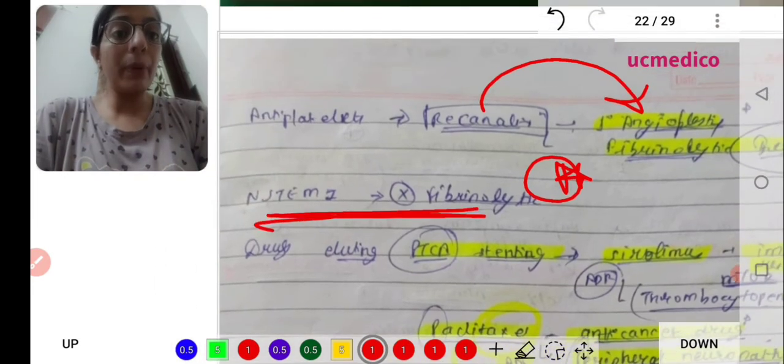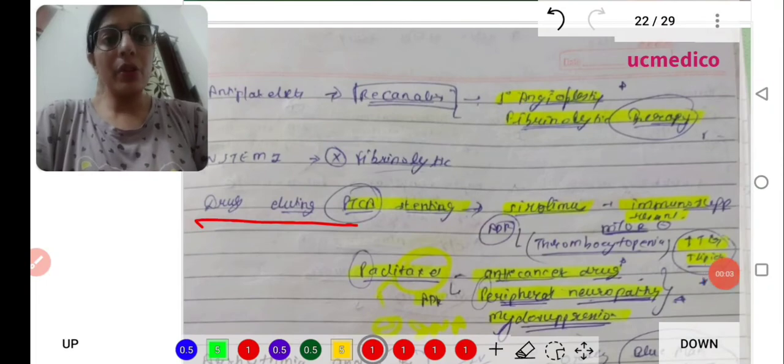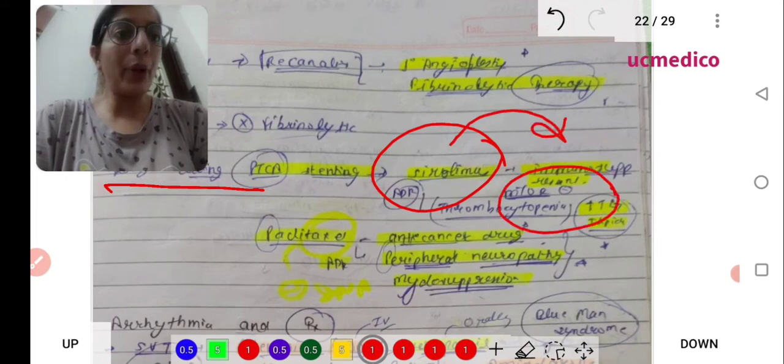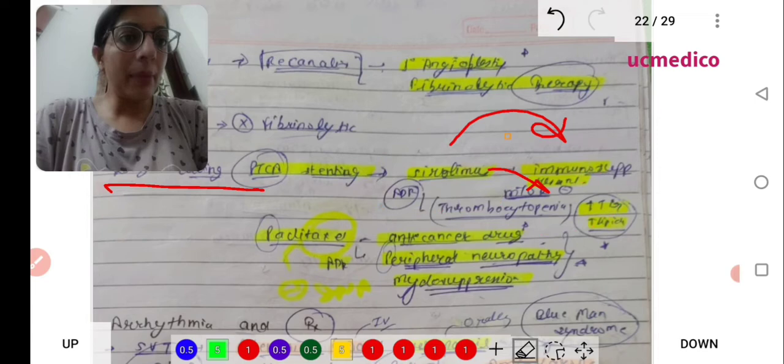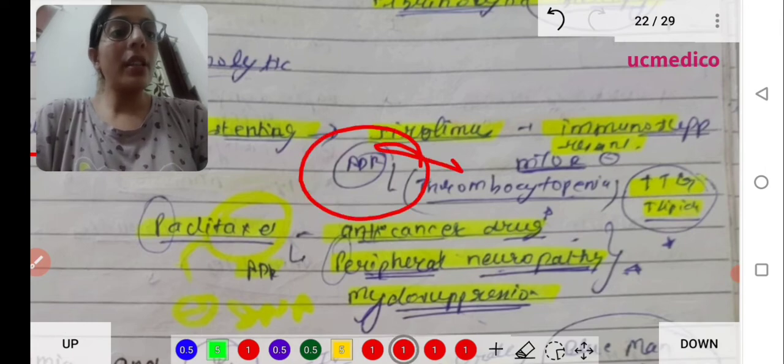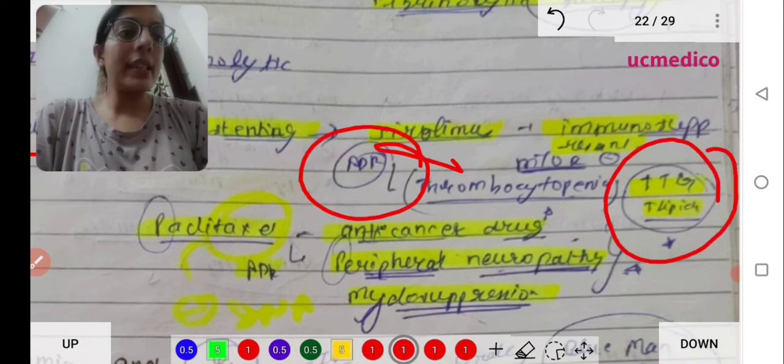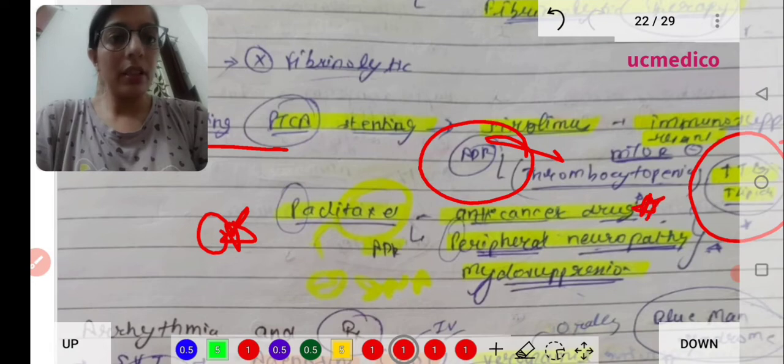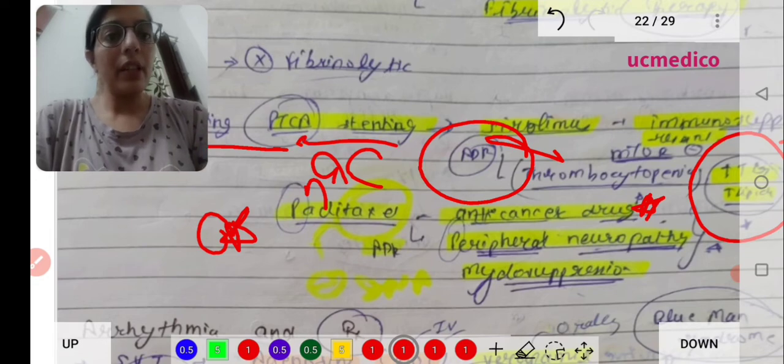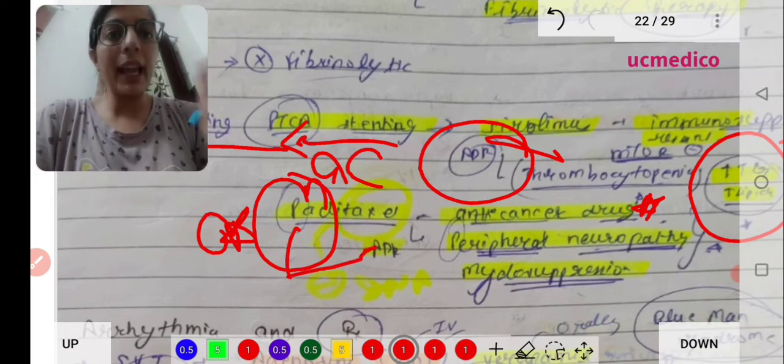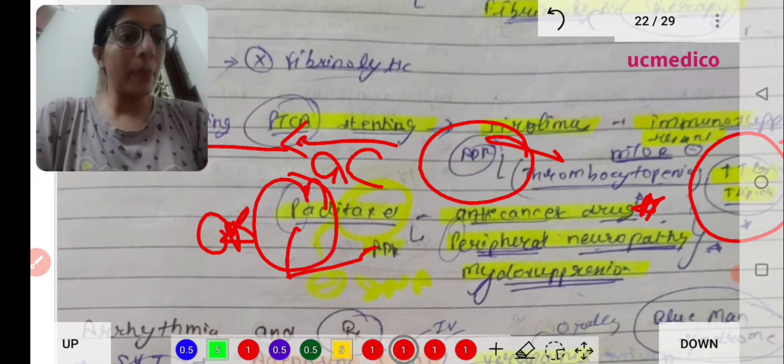Drugs used in PTC and stenting: Sirolimus is an immunosuppressant drug which is an mTOR inhibitor. The adverse drug reaction of this drug is it causes thrombocytopenia and also increases the lipid profile, that is lipid dystrophy. Other drug is paclitaxel, an anti-cancer drug. Side effects include peripheral neuropathy, and almost all anti-cancer drugs cause bone marrow suppression, that is myelosuppression.